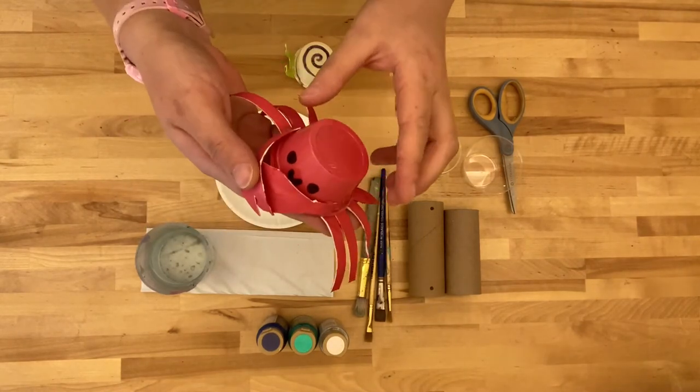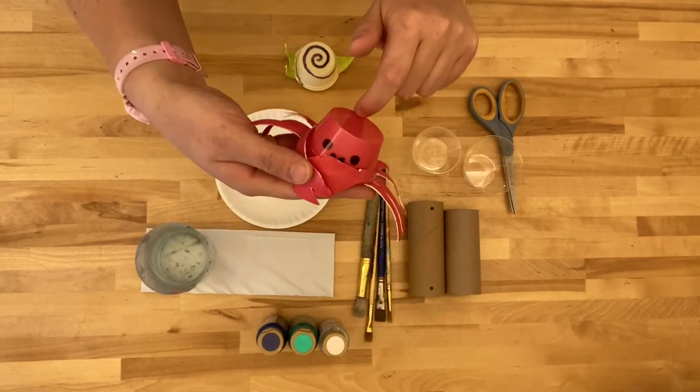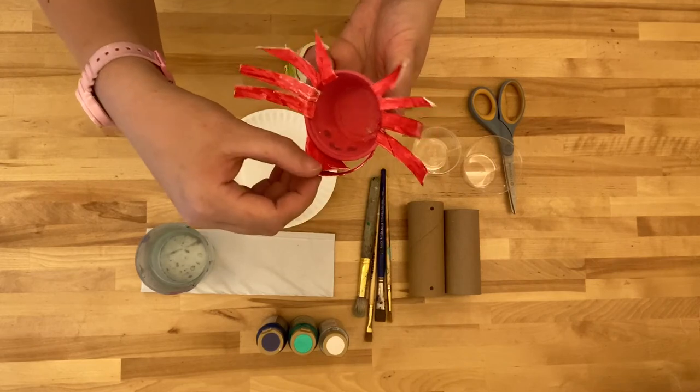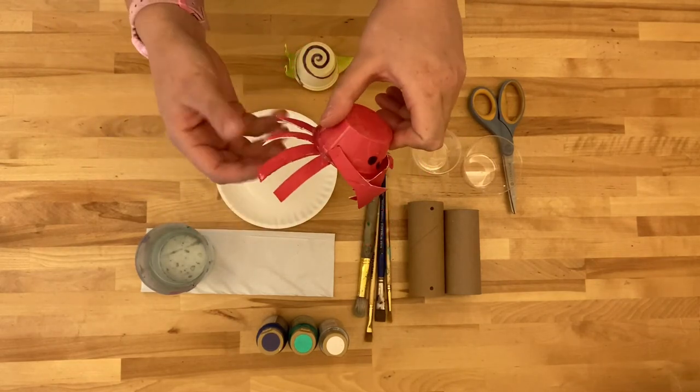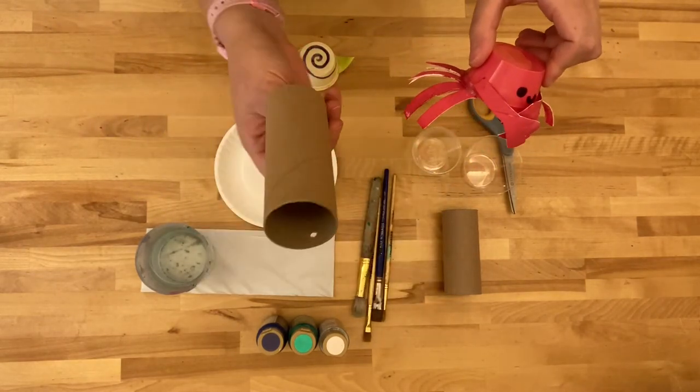So here is my crab. I've used the plastic container for his body and then for the claws and the legs I used a paper tube.